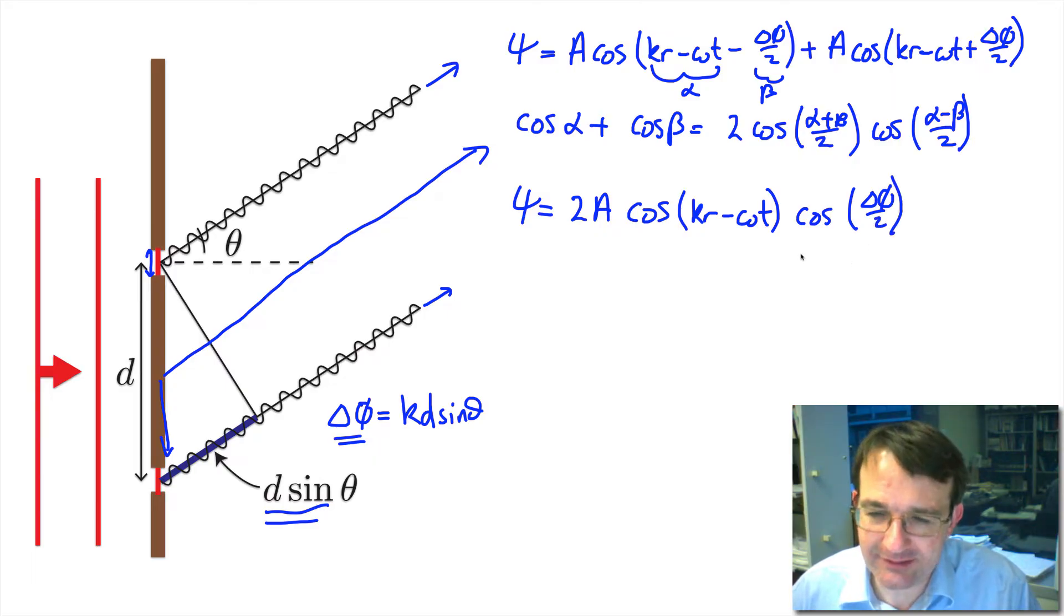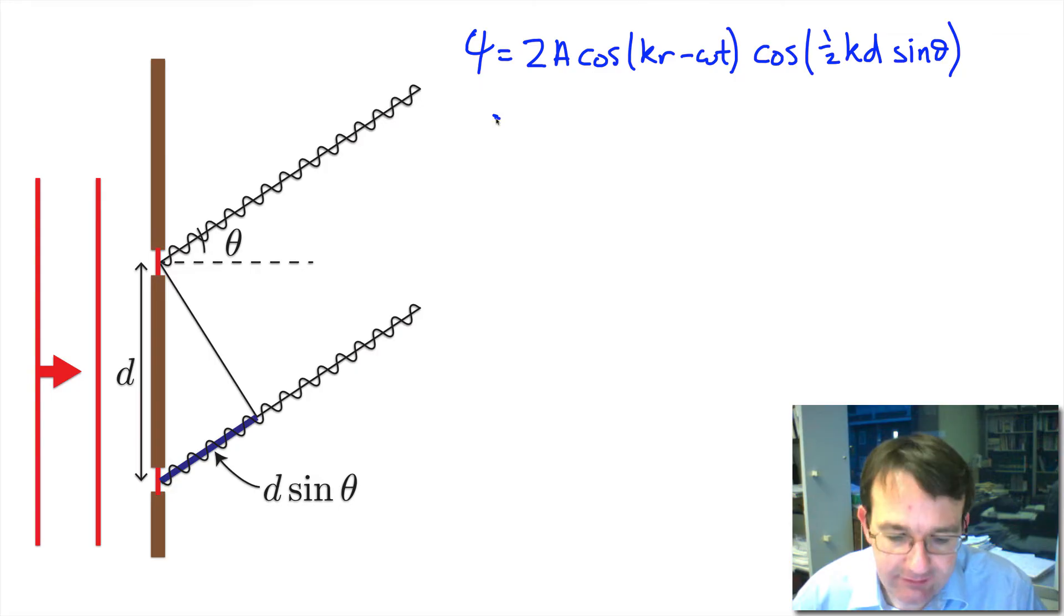Let's have a look and see what that's going to look like but to do that we're going to have to expand out this term here. Here is the amplitude function that I wrote out before but now I've expanded this term. Remember that we had delta phi and delta phi is just k times d sin theta, so there's k times the path length difference.